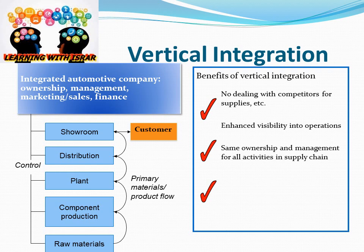You can see the pictorial representation of vertical integration in an integrated automotive company — ownership, management, marketing, sales, and finance — from raw material, component production, plant, distribution, and showroom. From raw material to retail, they are owned by the same company, so it's called vertical integration. Benefits of vertical integration include no dealing with competitors for supplies, enhanced visibility into operations, same ownership and management for all activities in the supply chain, and better control to serve customers.